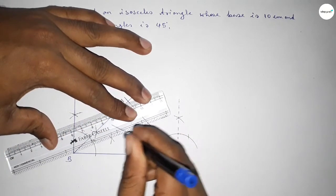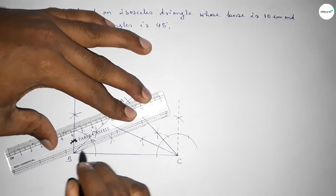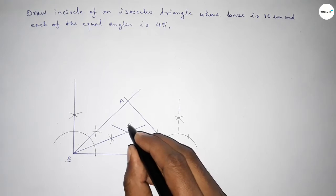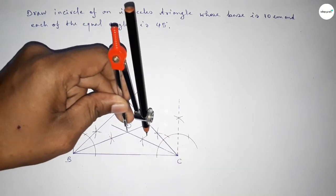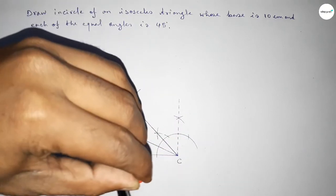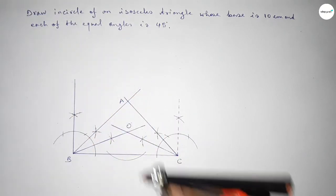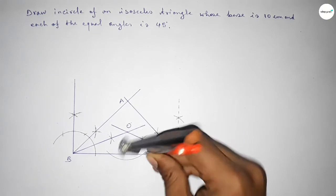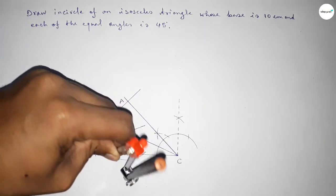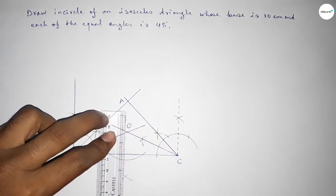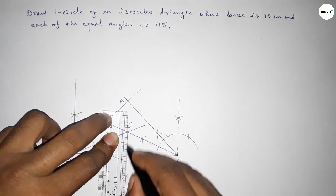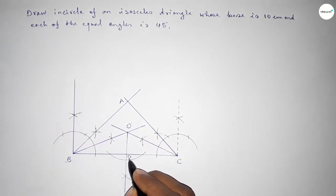Joining this line — both angle bisectors intersect at a point, taking this as point O, the incenter. Now we have to draw a perpendicular line from O to line BC. Taking any length and drawing an arc, with the same length putting the compass here and cutting here, then cutting here again. Joining this to get the perpendicular, which intersects BC at point D.